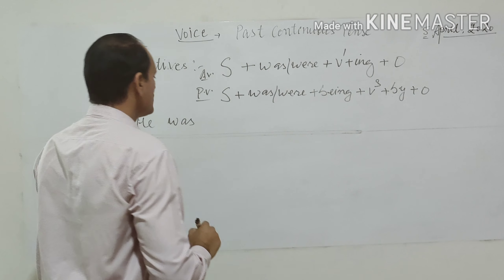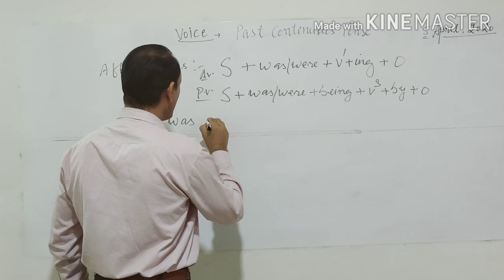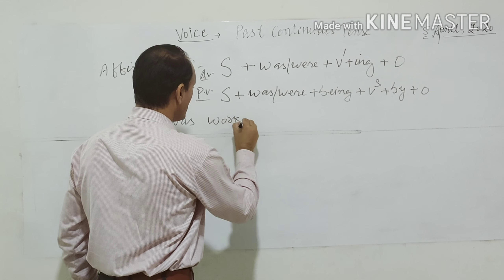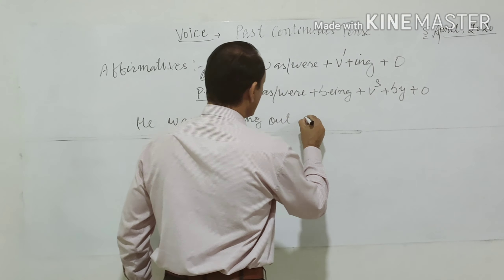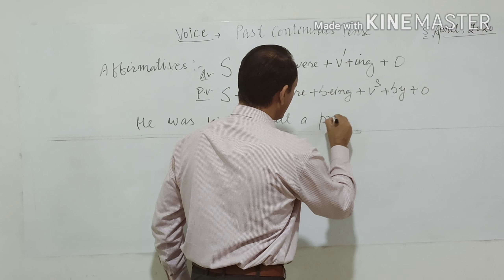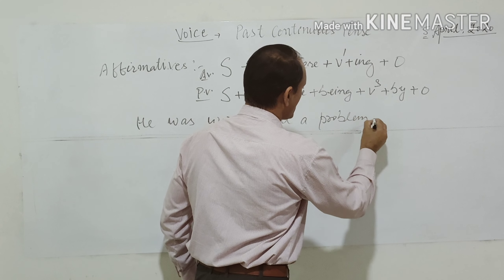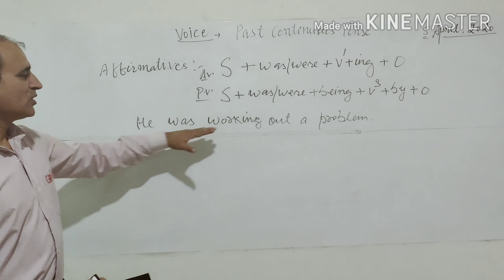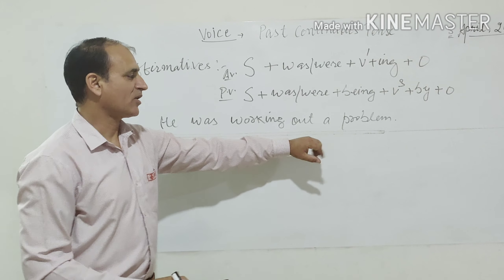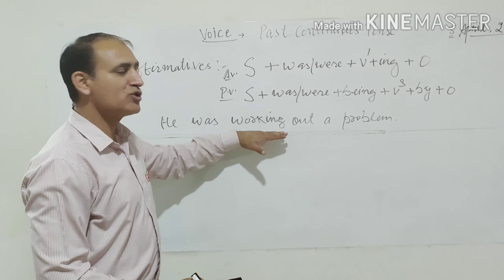Take the sentence: 'He was working out a problem.' This means he was working on a problem, trying to solve a puzzle. If we change this into passive voice, we follow the passive structure.